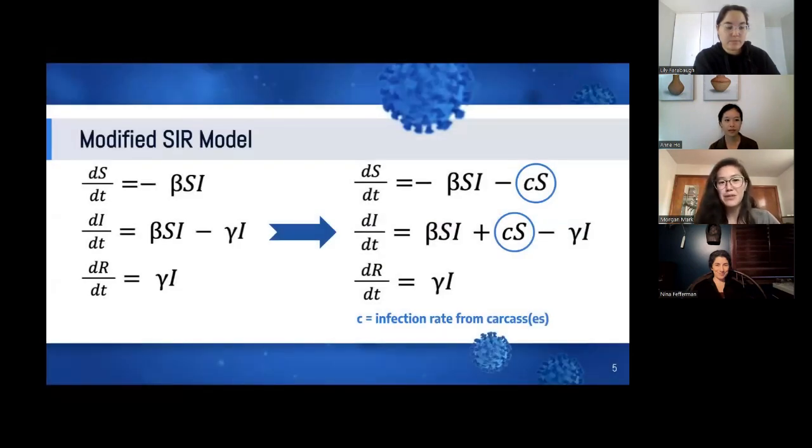One way that Nina and I have been trying to address this question is through a modified SIR model. SIR models keep track of the number of or proportion of individuals in a susceptible, infected, or resistant compartment of a population. On the left here, I have the most basic form of the SIR model, which really only accounts for the spread of disease between animals of the same species or intraspecific disease transmission. When we're dealing with scavenging, that's not specifically an intraspecific mechanism of transmission. A scavenger could become infected from a carcass. So to model this external source of disease, we added an extra term in the basic SIR model that accounts for a constant infection rate from carcasses.